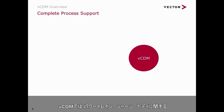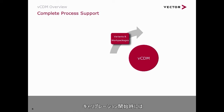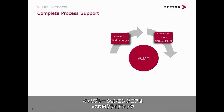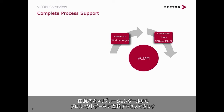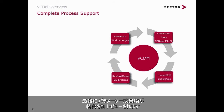VCDM supports all typical calibration processes for powertrain, chassis, and body calibration. At the start of a calibration iteration, it helps to set up target datasets and assign work packages and permissions. The project data can directly be accessed by the calibration engineer with the VCDM client or from their calibration tool of choice. Work results can be imported into VCDM and distributed to the respective datasets, and finally the parameter deliveries are merged and reviewed.